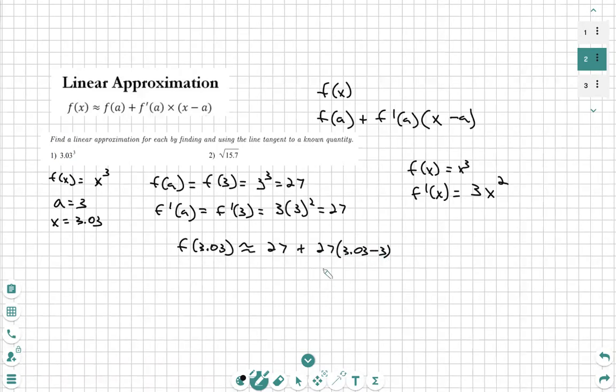Alright, we're going to just plug all of that into our calculator. Step by step. 27 plus 27 times 0.03. Multiply 0.03 times 27. 27 plus 0.81. 27.81 is our approximation for number one.